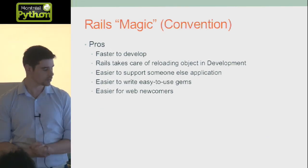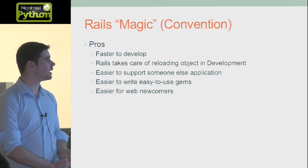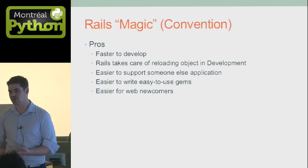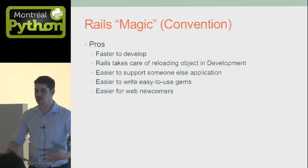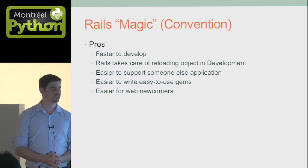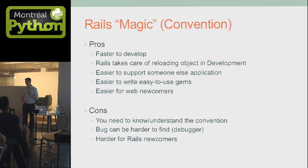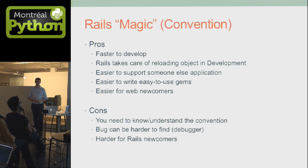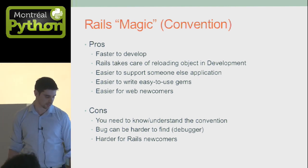So what are the pros of convention? It's faster to develop because you don't need to write a lot of routing code, the framework handles reloading, and it's a lot easier to read someone else's application because it's built the same way as yours. It's easier to write gems because everyone has the same structure, so you can inject your code into any application. On the other side, the cons: you need to know and understand the convention very well. It's code running in the background — it's not really magic, but it can be hard to find. That's why the debugger is useful — you can go directly into the framework and see what's going on. And it's harder for Rails newcomers because you need to know the convention.